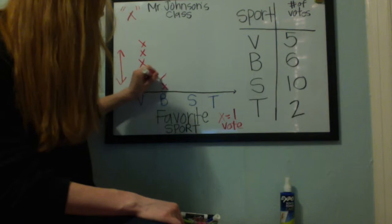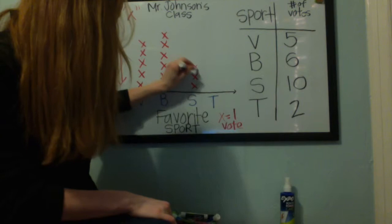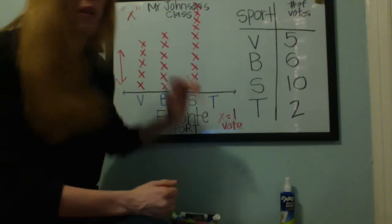Soccer has ten votes, so we count up ten x's. Make sure when you use this that you have enough room to go completely up if you have to. Tennis is going to have two votes, and it's just two x's.